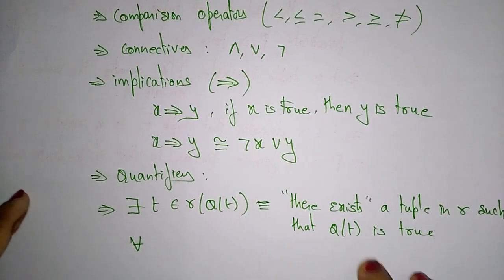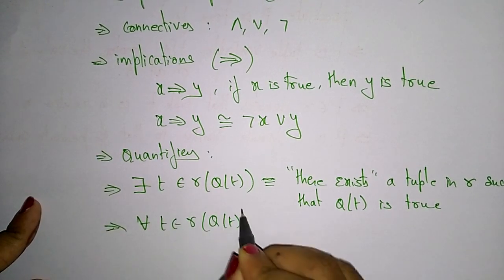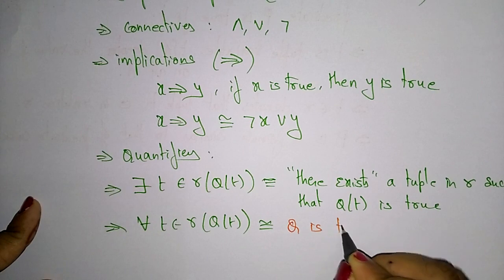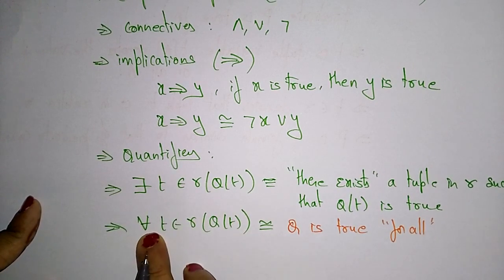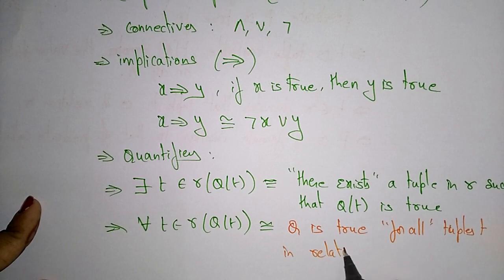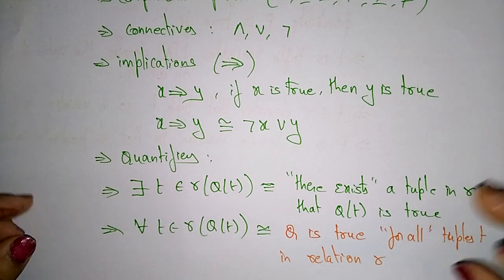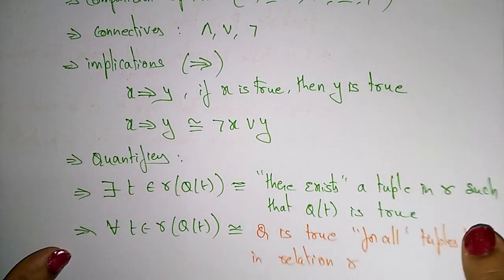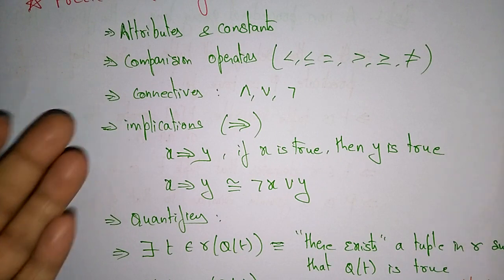For 'for all': the expression 'for all T belongs to R, Q(T)' means Q is true for all tuples T in relation R. So the predicate calculus formulas contain: attributes and constants, comparison operators, connectives, implications, and quantifiers.